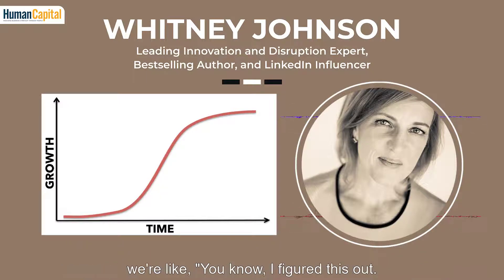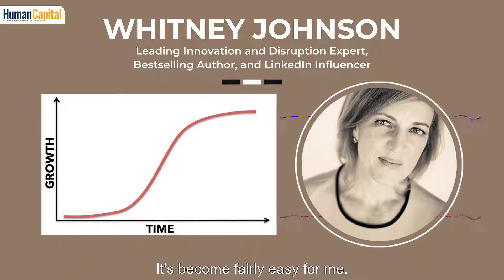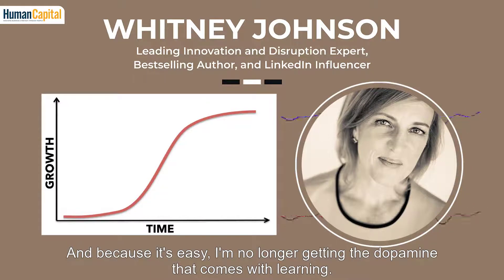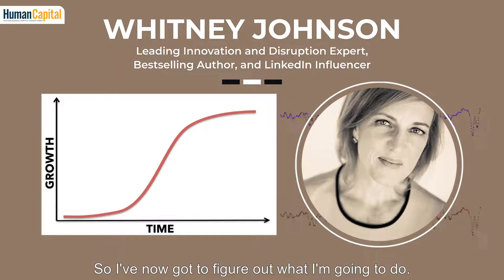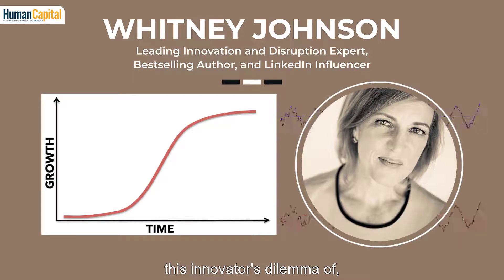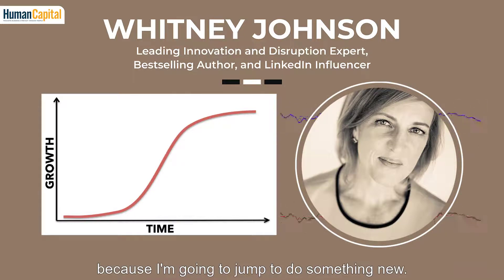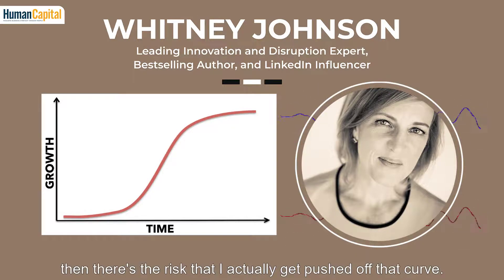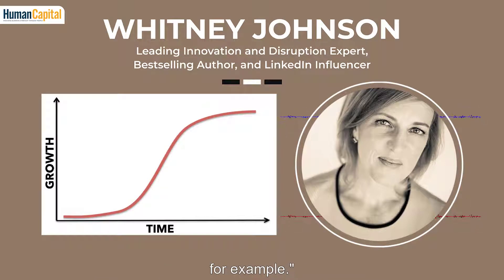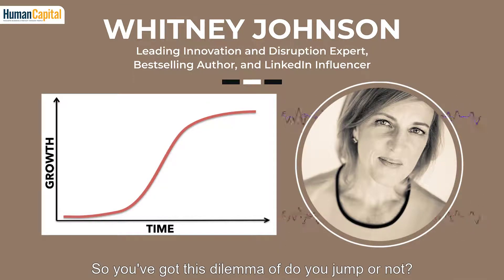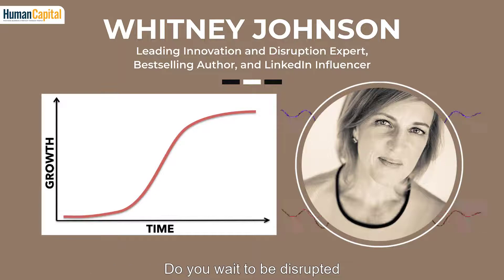Then you get to the high end of the S-curve. You play out that growth and reach the point where you've figured it out — you know how to do it, it's become fairly easy. And because it's easy, you're no longer getting the dopamine that comes with learning. Now you've got this innovator's dilemma: if you jump, you're scared because you're doing something new; if you stay, there's the risk you actually get pushed off that curve — like losing your job.